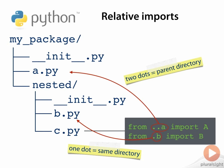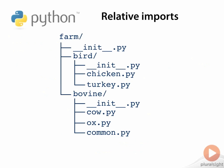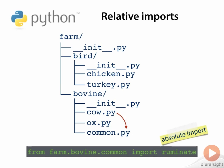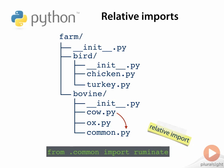Let's illustrate this with some simple examples. Suppose we had this package structure, and further suppose you needed to import the `ruminate` function from `farm.bovine.common` into `farm.bovine.cow`. In cow.py, you could use an absolute import, or you could use a relative import.